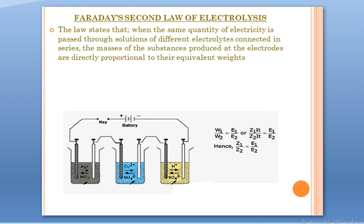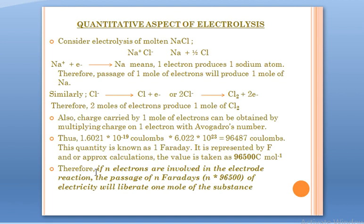To understand the quantitative aspect of electrolysis, consider a simple equation — electrolysis of molten NaCl. NaCl gives sodium released at the cathode and chlorine gas released at the anode. Na⁺ takes up one electron and gives sodium. To produce one sodium atom, one electron is needed.